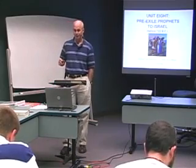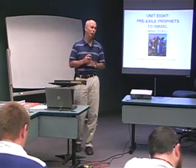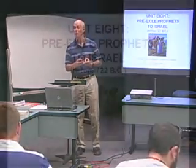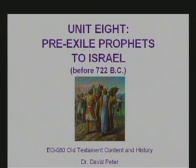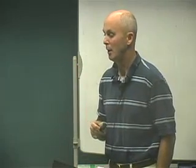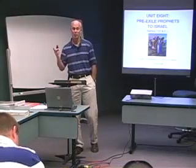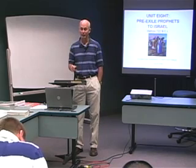We're going to begin looking at the pre-exile prophets, and in one sense you could say there are really two exiles. There's the exile of the northern kingdom which takes place in 722/721 BC. There's no real return, at least not in the way of a unified people coming back after that exile. The second exile will take place in 587 and that will be of the southern kingdom.